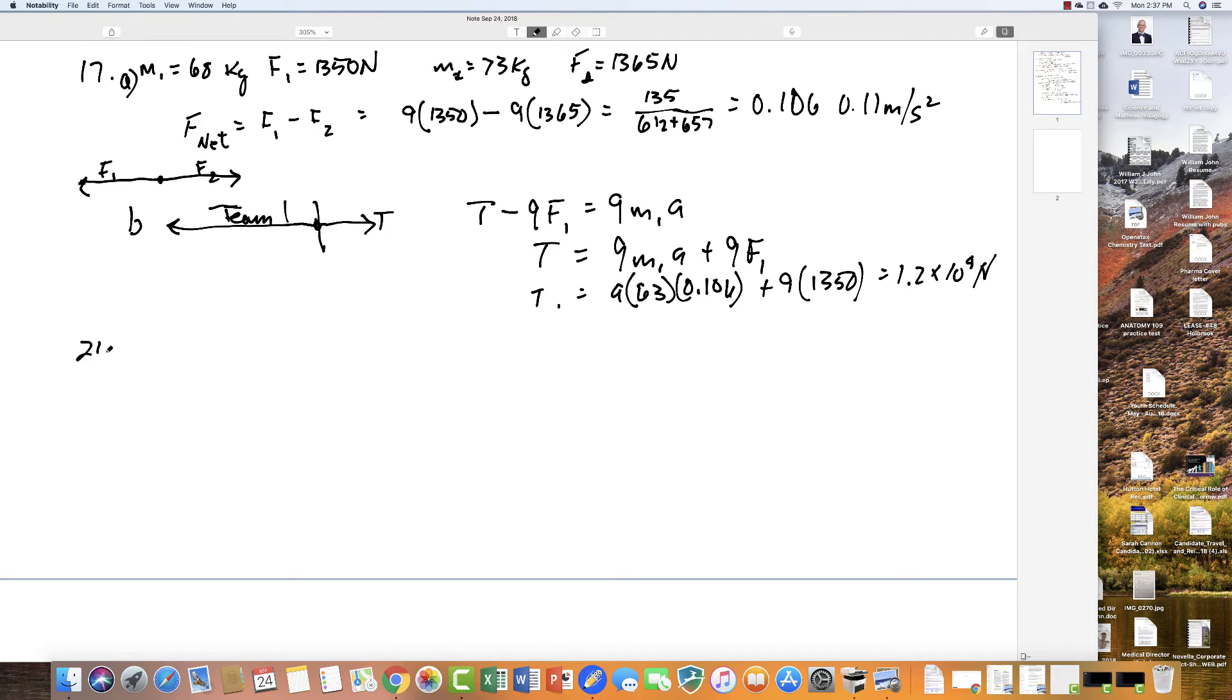Problem number 20 states that a 60 kilogram gymnast climbs a rope. What is the tension on the rope if he climbs at a constant speed? That means A equals zero. Drawing our diagram, we have T1 here and his weight here. Since he's climbing at a constant speed, there's no other force involved. So T1 equals his weight, which is mass times acceleration of gravity, or 9.8 times 60.0, giving 588 newtons.